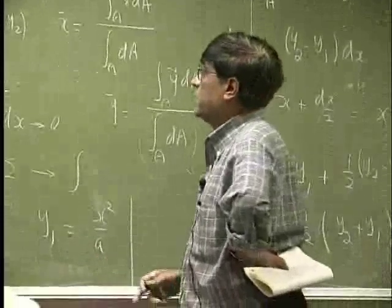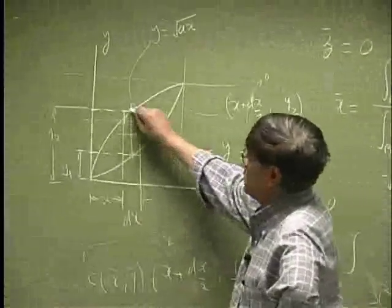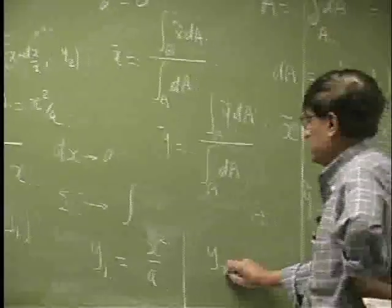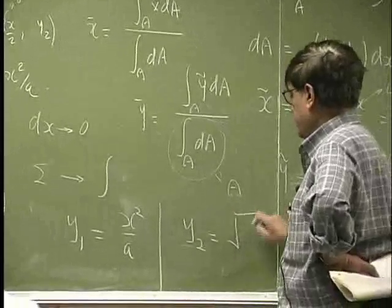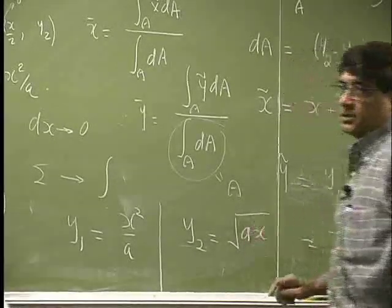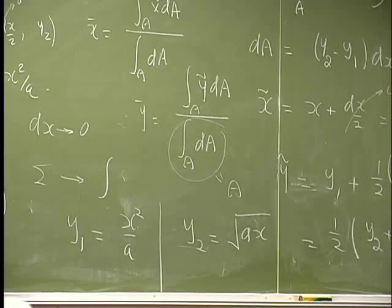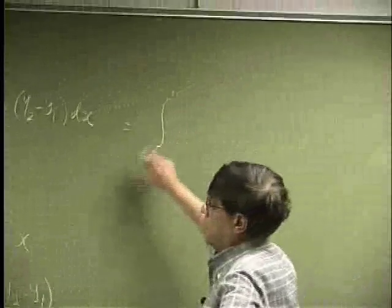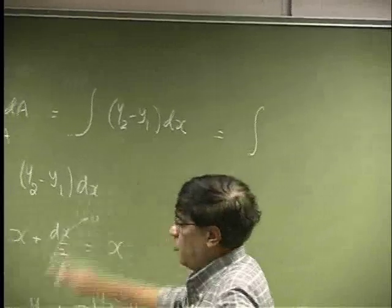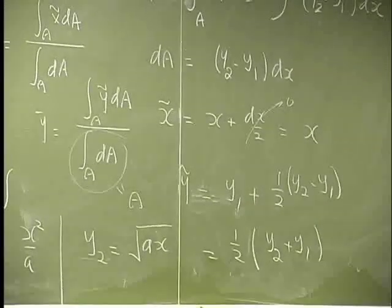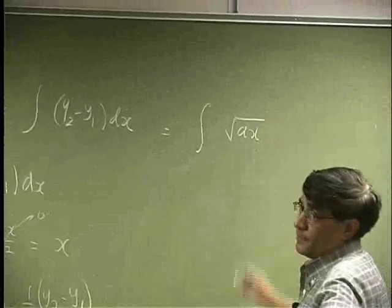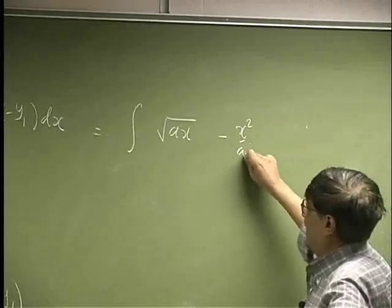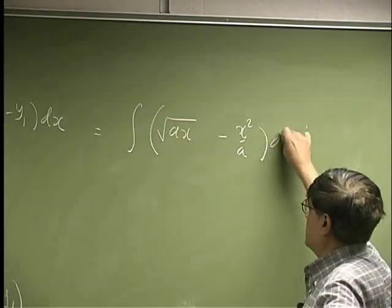Then the next one, this point, that's on the second curve. Or you could say that y2 is going to be equal to square root a times x. So that's the second equation. Now this helps because the moment if I come here, I could make a substitution for y2. That's square root a x minus y1, which is x squared over a, times dx.